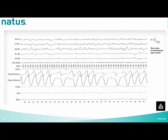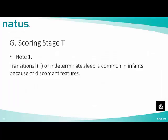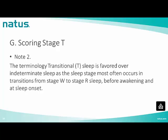Transitional or indeterminate sleep is common in infants because of discordant features, as it contains physiological markers of more than one sleep state. The terminology 'transitional sleep' is favored over 'indeterminate sleep,' as this sleep stage most often occurs during transitions from stage W to stage R sleep, before awakening, and at sleep onset.